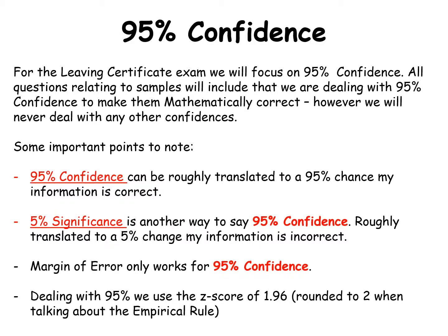So let's talk about 95% confidence for a second. For the Leaving Cert exam we're just going to focus on 95% confidence. All questions relating to samples will include that we're dealing with 95% confidence to make them mathematically correct; however we will never have to deal with any other confidences. So don't panic — a lot of students will often ask what happens if it says 99%, and the answer is it won't.